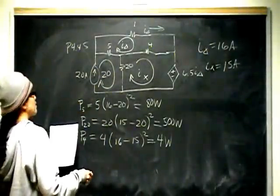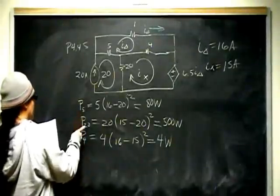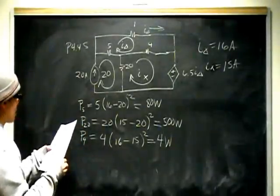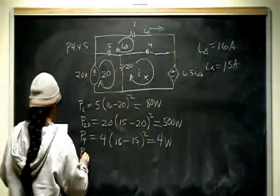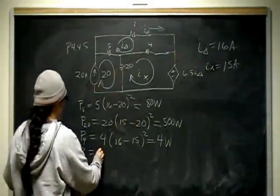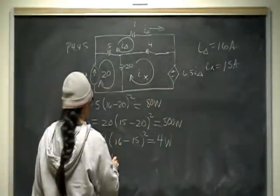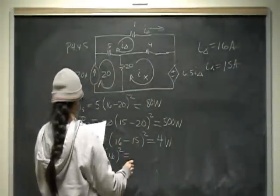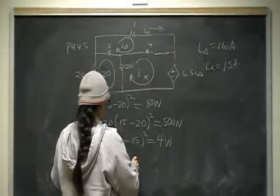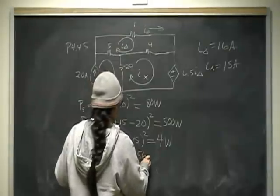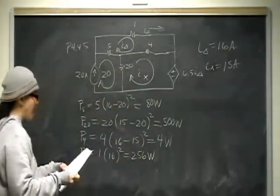And let's see, 1, 2, 3, what am I missing? The 1 ohm resistor. The power absorbed by the 1 ohm resistor is going to be 1 times I delta squared, which is 16 squared. So that will absorb 256 watts of power.